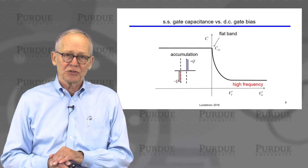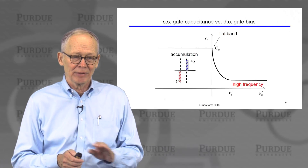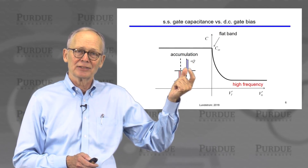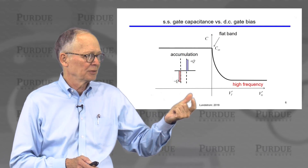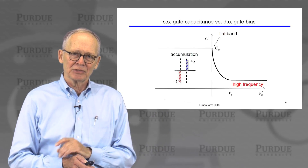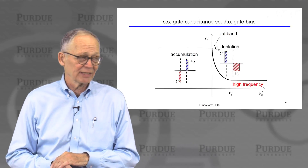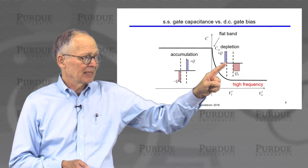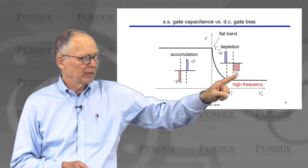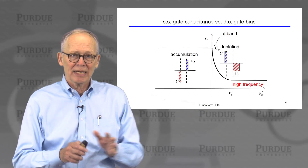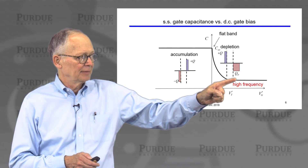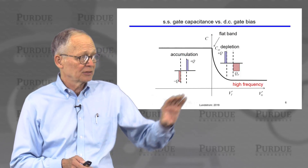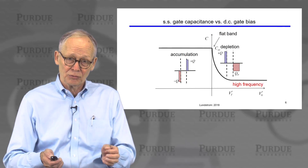We can understand this in terms of what's happening to the charges inside the semiconductor. In accumulation, we have accumulated hole charge piling up right at the interface — charge on two metallic plates surrounding the insulator — which is why we have the insulator capacitance. In depletion, the semiconductor is depleted to some depth. We have a metal plate at the top of the insulator and one underneath the depleted semiconductor. The depletion region is typically much thicker than the oxide layer, giving two capacitors in series and a lower overall capacitance.